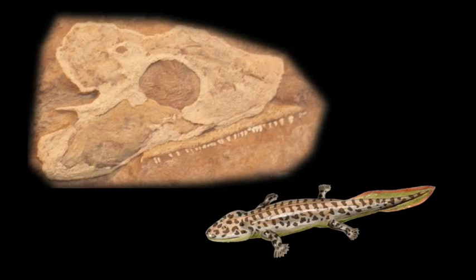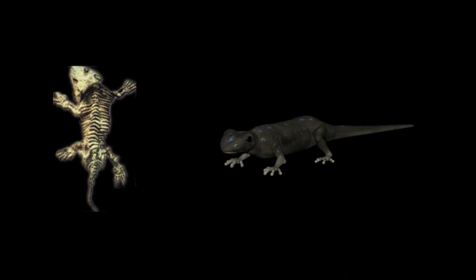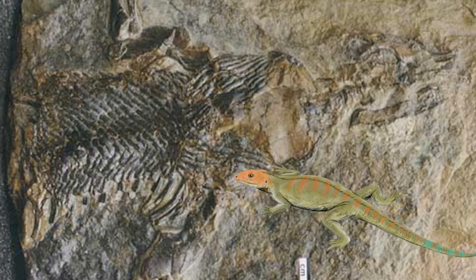About 340 million years ago, we see tetrapods for the first time, and then amphibians. And later, 300 million years ago, we see the first small reptiles. All extinct today.